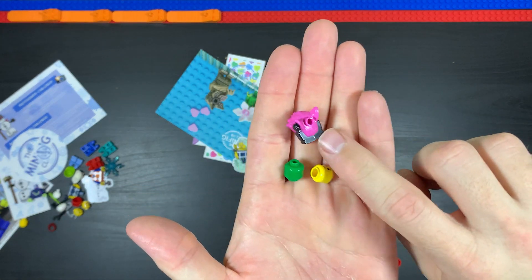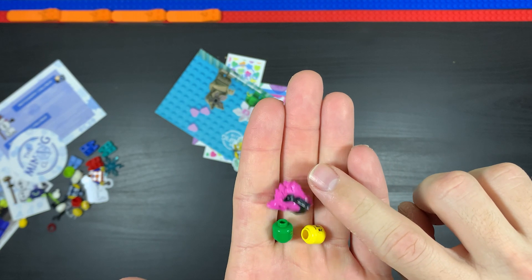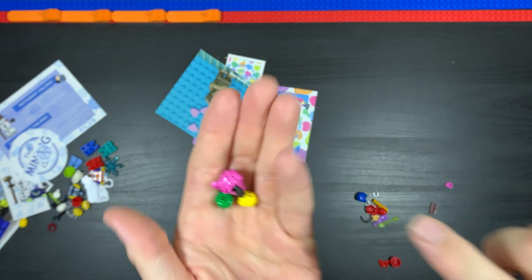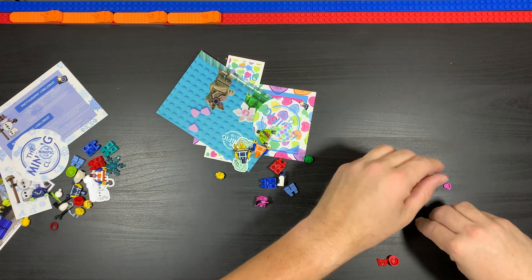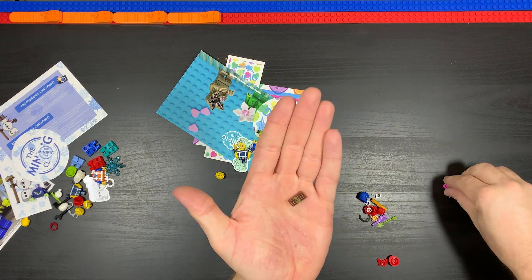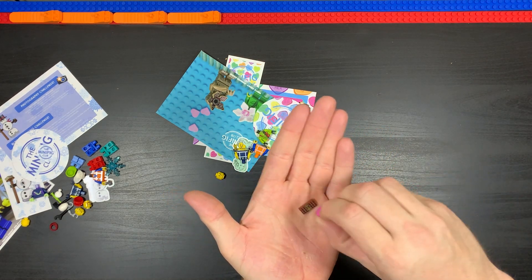First thing I thought was Teenage Mutant Ninja Turtles, like Bebop and Rocksteady. Maybe it's possible. Our special item this time, being this was Valentine's Day area, we got ourselves a piece of chocolate and a heart there.